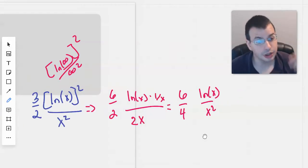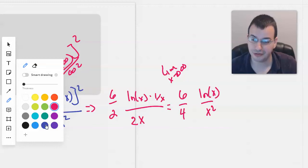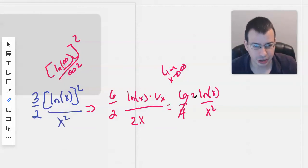Again, we're going to take the limit as x approaches infinity. This is no good because we get natural log of infinity over infinity squared again. I'll rewrite this as 3 halves.